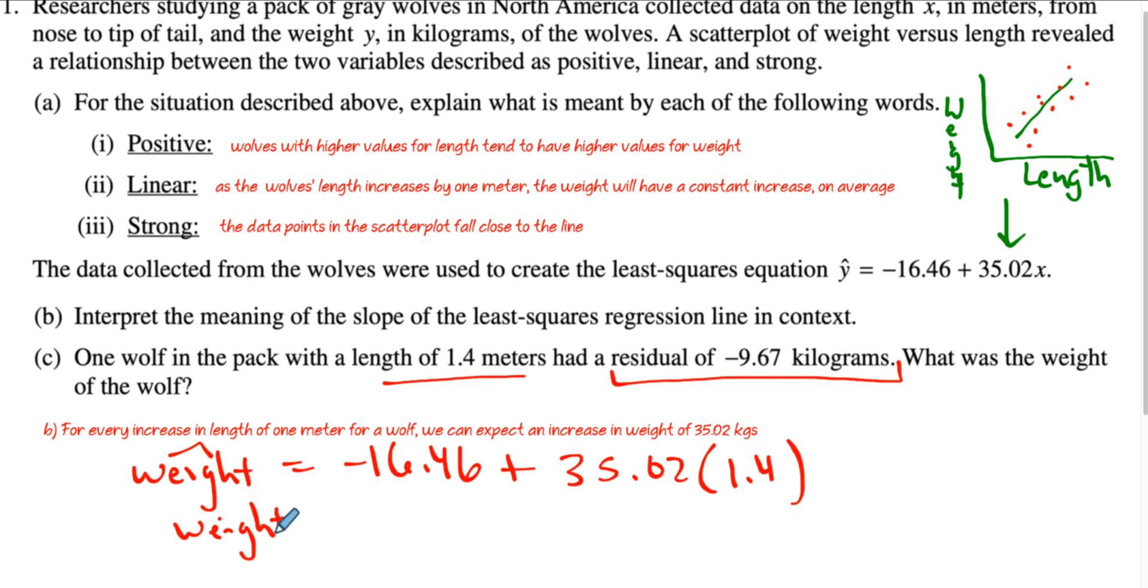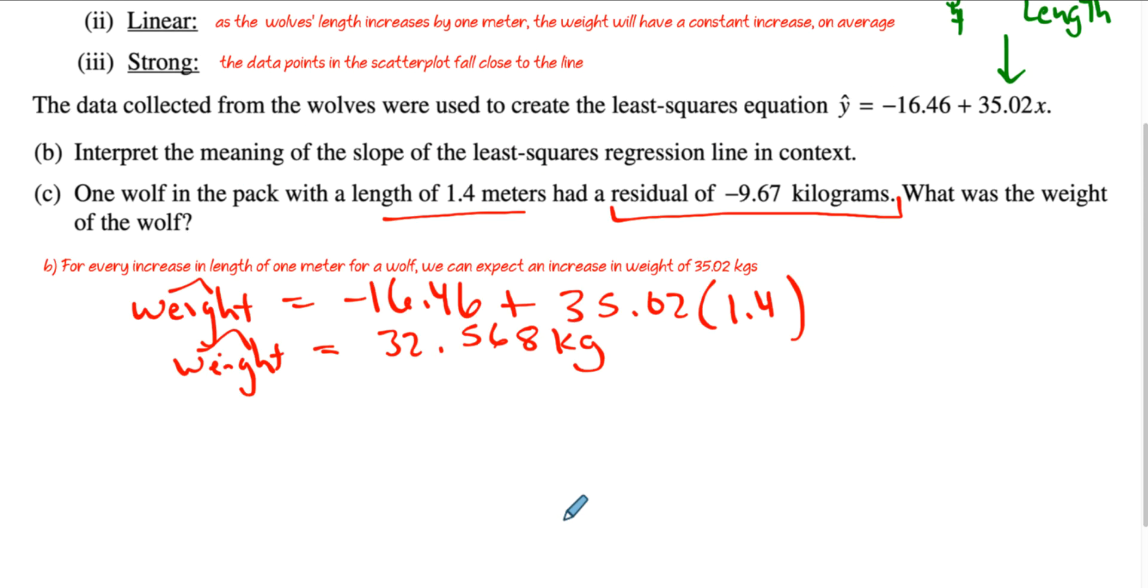And when we do that, you will get the predicted weight to be, that's what that little hat means. If you remember, that hat means what we would predict. That is going to equal 32.568. Go ahead and check me in your calculator. Kilograms, that's the predicted weight.